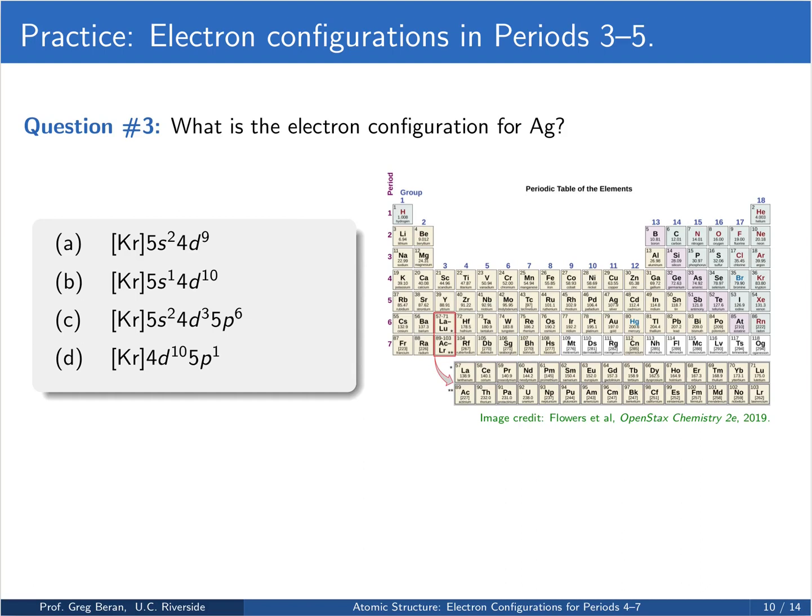Let's try a third one. What's the electron configuration for silver, which is right here in group 11? Again, pause, attempt the question, and resume when ready.